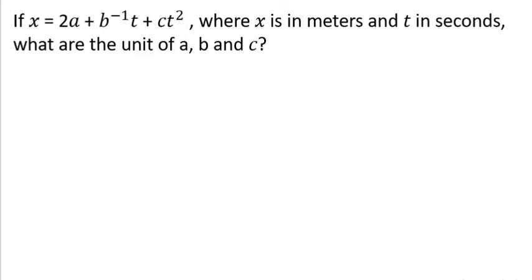So we're just going to assume that this equation is dimensionally consistent. Let's rewrite it. What we have is x equals 2a plus b negative 1 t plus ct squared. So since we're making an assumption that is dimensionally consistent, then each term, this term, this term, this term, can be equated to x.